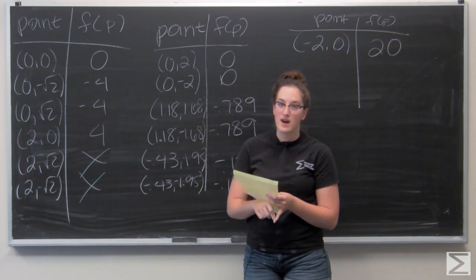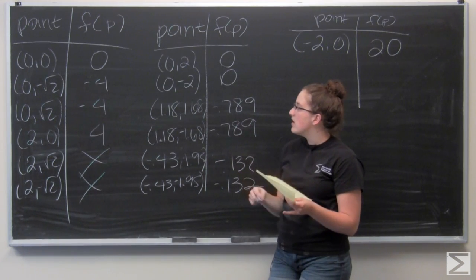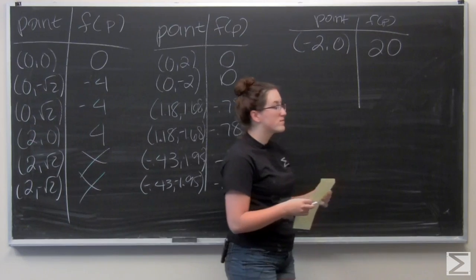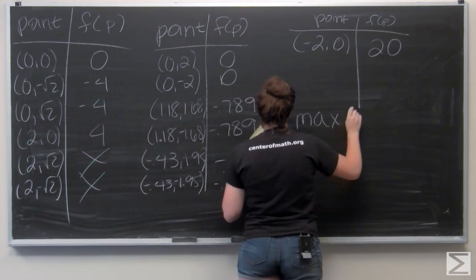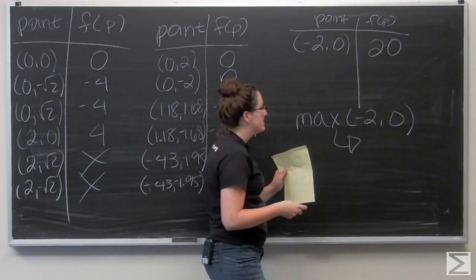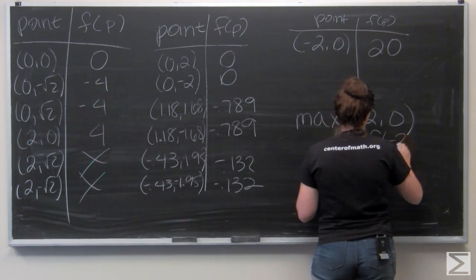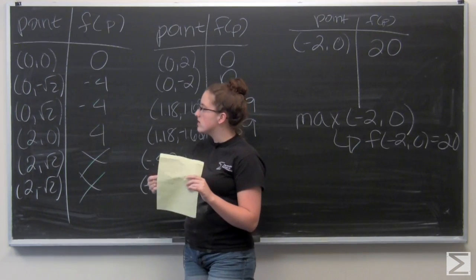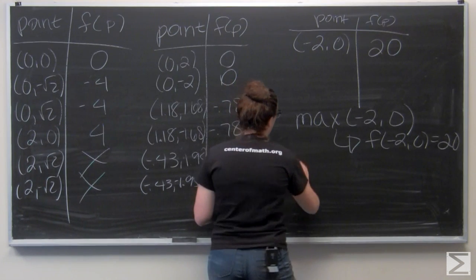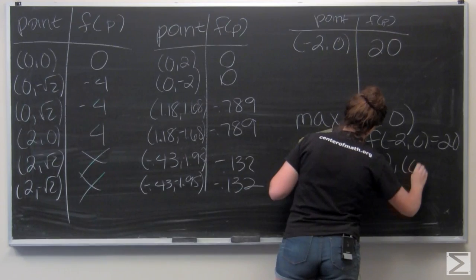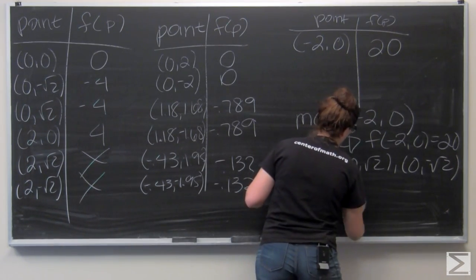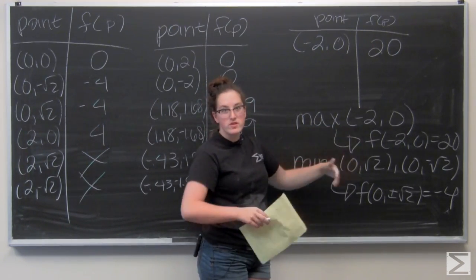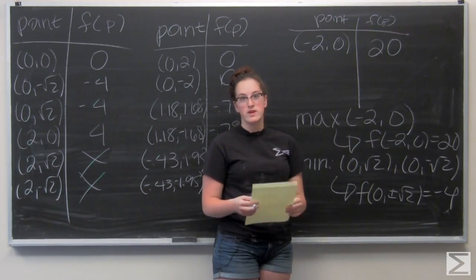Looking through the function values, the maximum occurs at the highest value. The highest function value is 20, attained at the point (-2, 0). The minimum value is -4, attained at two points: (0, √2) and (0, -√2). So f attains its maximum value of 20 at (-2, 0), and attains its minimum value of -4 at (0, √2) and (0, -√2).